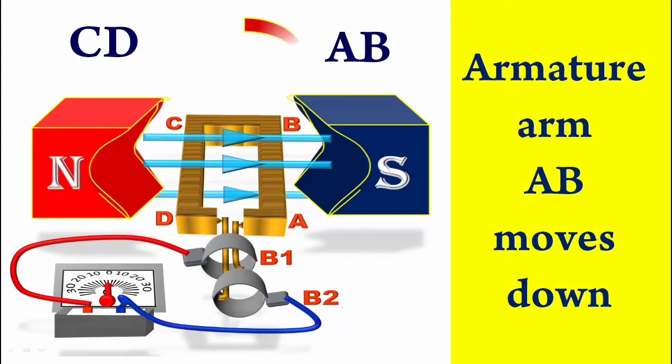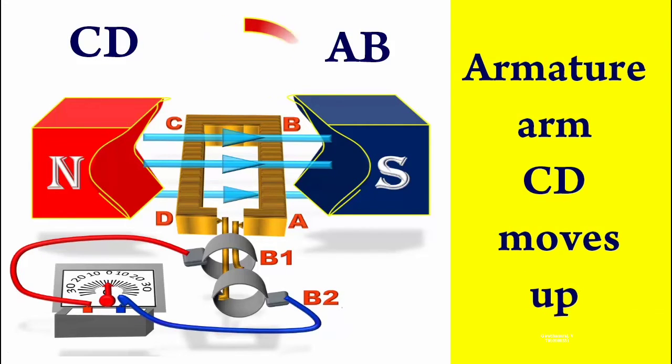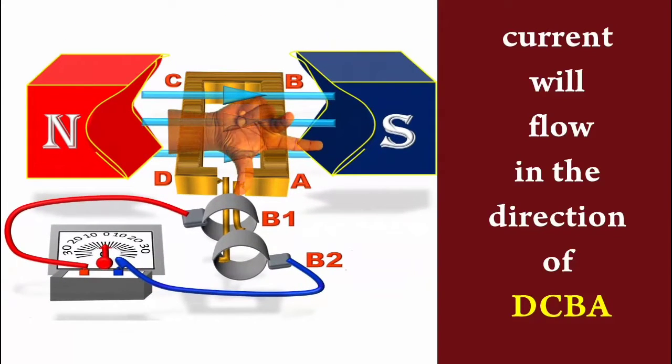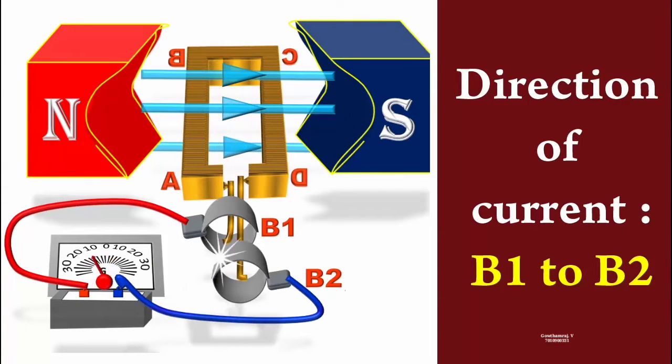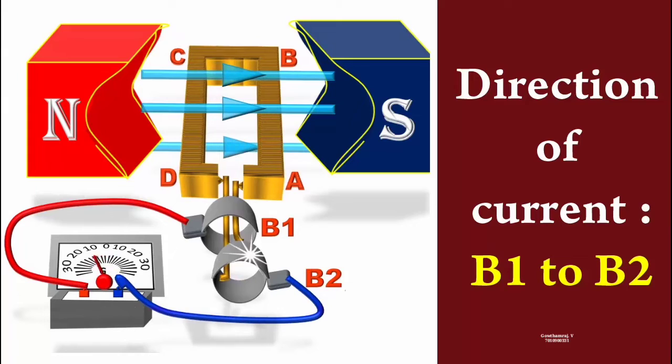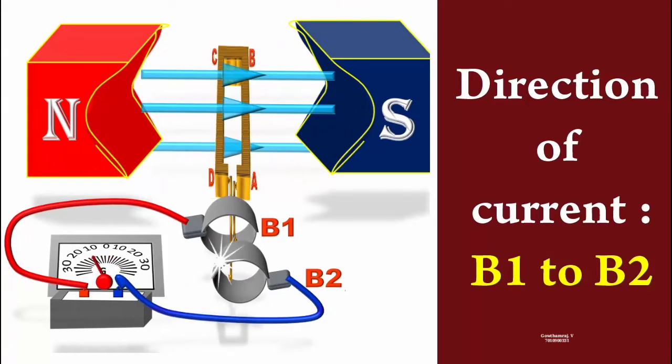Now during the next half of rotation, arm AB moves down while arm CD moves up. Again by Fleming's right hand rule, current will flow in the direction DCBA. So the current will flow from carbon brush B1 to B2 through the galvanometer. Thus the induced current changes its direction for every half rotation.